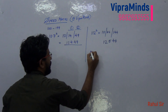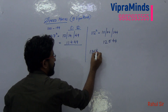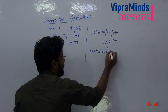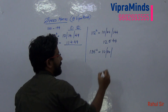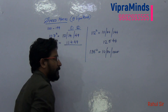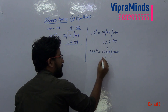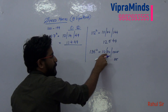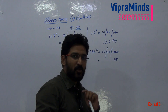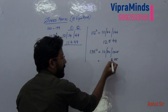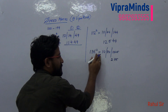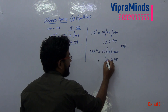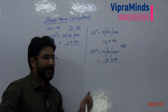Now let's take one more example: 135 squared. Again write 10 in the first block. In the next block, double of the last two digits 35 is 70. The square of 35 is 1225. In the last block write 25 and carry forward 12. So 70 plus 12 is 82. Write 2 in the middle block and carry forward 8. So 10 plus 8 is 18. The answer is 18225.